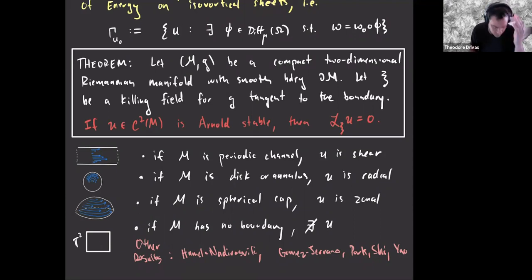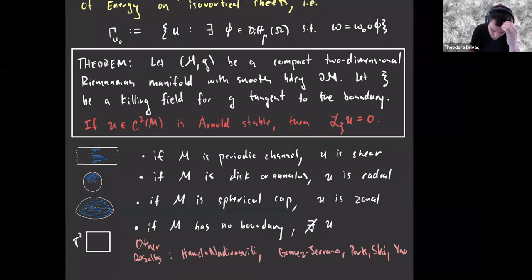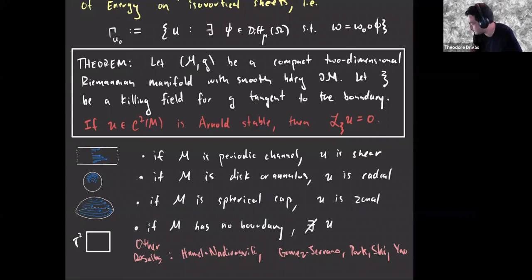There are other results on symmetries: results by Nadirashvili and Hamel about non-degenerate stationary states inheriting some symmetry on periodic channel and annulus, and results by Havin and co-authors on symmetries inherited by vorticity with sign — that is, if your stationary state has vorticity of given sign.